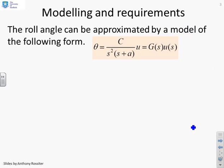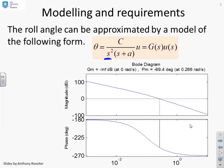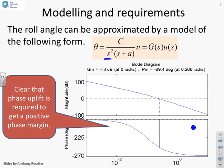The roll angle can be approximated by a model of the following form. So you'll see we've got the double integrator there, c over s squared s plus a. And if you look at the Bode diagrams, you'll notice a key problem. The phase never goes above minus 180 degrees. So it's not possible to get a positive phase margin. And here you'll see the default phase margin minus 70 degrees.